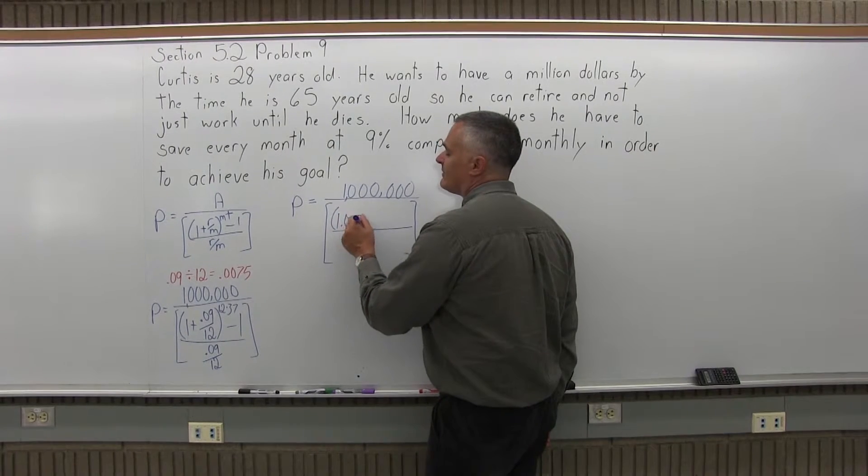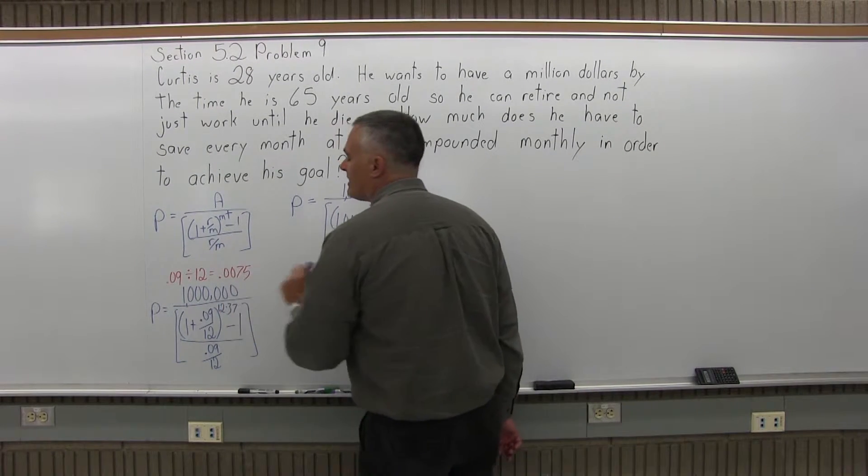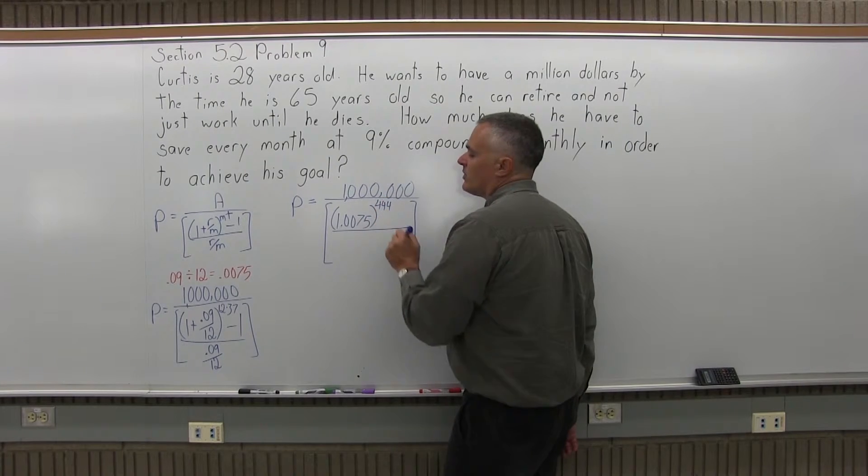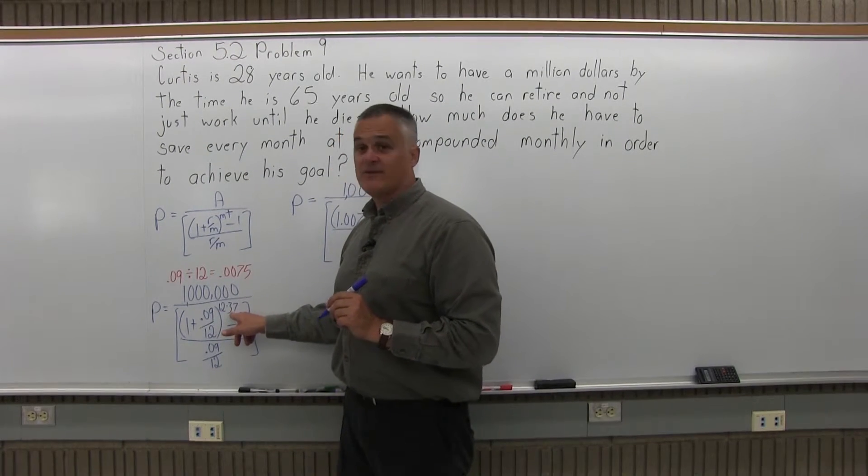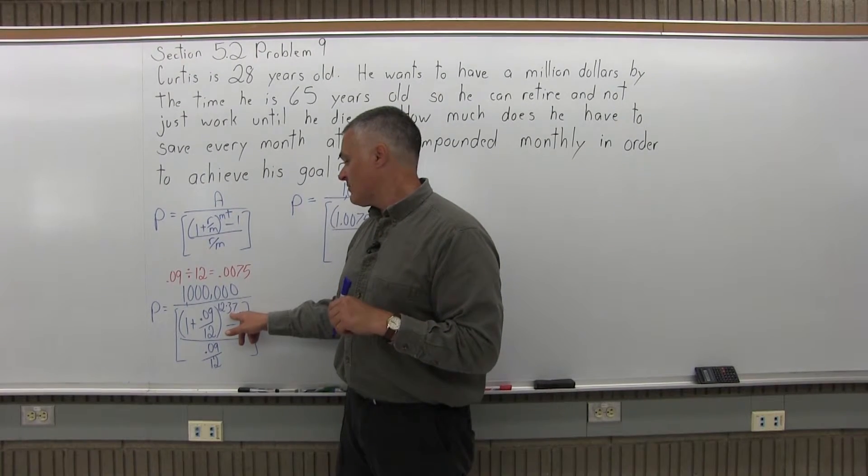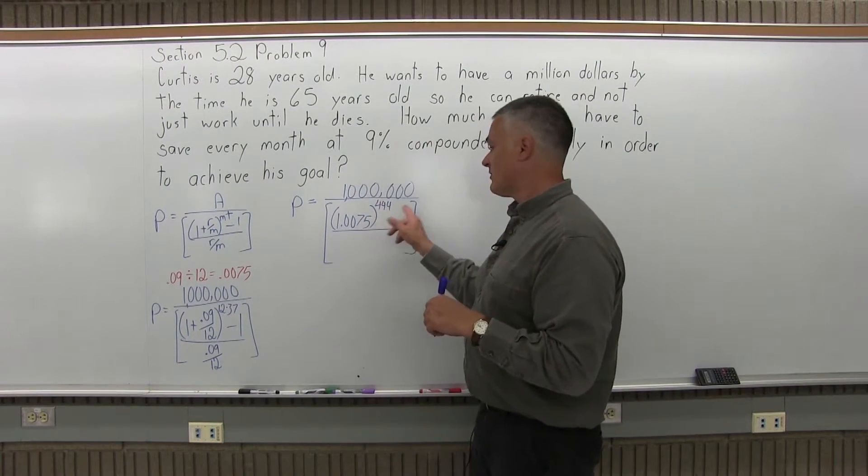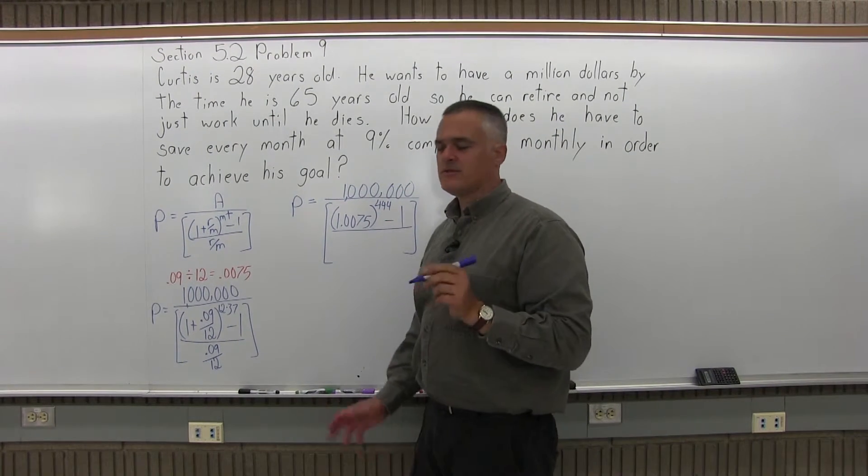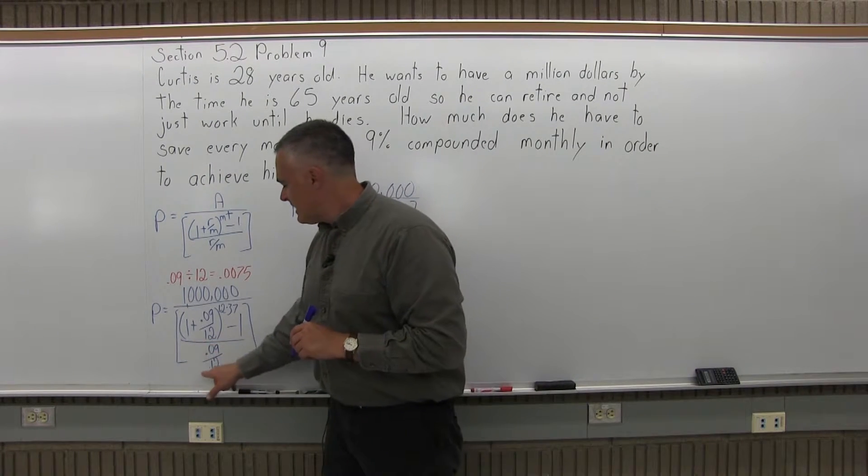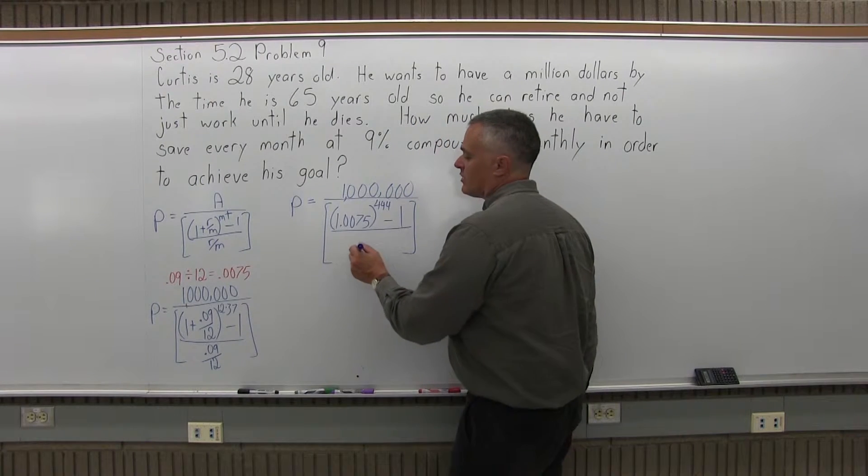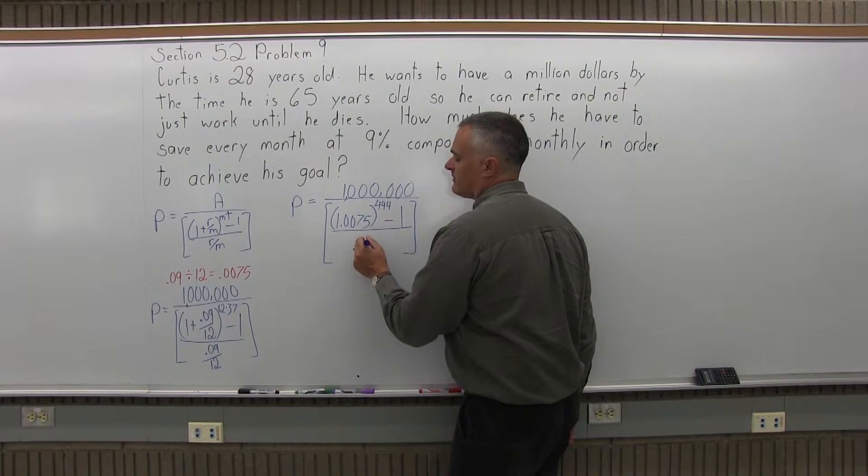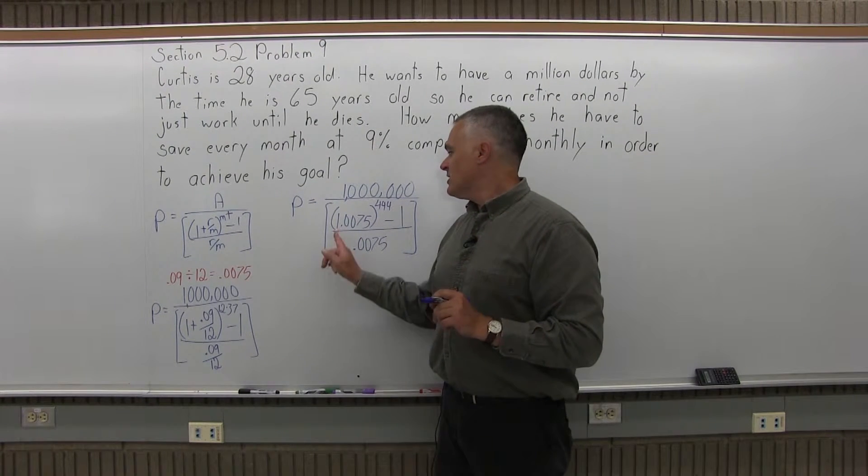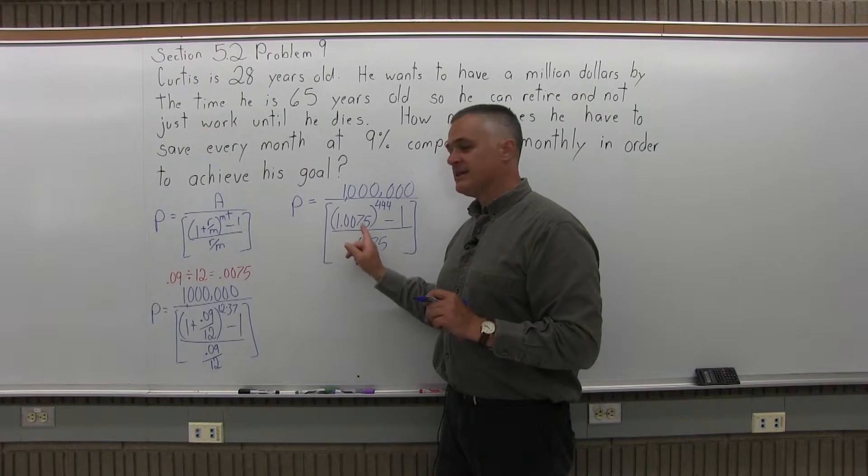So I have 1.0075 in parentheses to an exponent of 12 times 37. So 12 times 37, if I'm doing it right, is 444. Again, 10 37s is 370. So then two more 37s would be 74. So 370 plus 74 more should be 444. And after the parentheses there's a minus 1. And again, those big multiplications, just feel free to do that on your calculator. You don't have to try and do it in your head. And in the denominator of the brackets, .09 over 12 again, which again reduces to .0075. And I always point out you have the same decimal in the numerator and the denominator of the brackets. In the numerator there's a 1 in front, in the denominator there isn't. But the decimal part is the same.